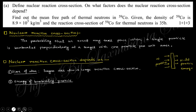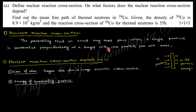Question 1 says: define nuclear reaction cross section, on what factors does it depend, and there is also a mathematical part. Nuclear reaction cross section is defined as the probability of an event where a single particle bombards perpendicularly through a target with one particle per unit area.